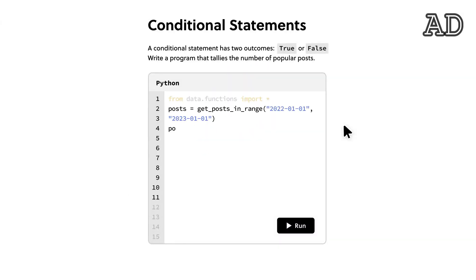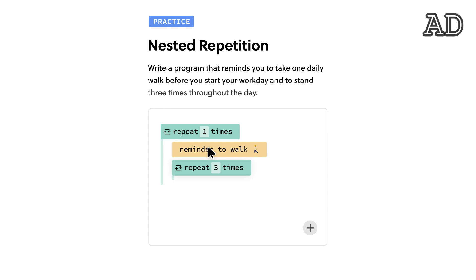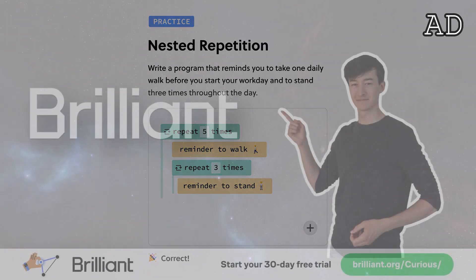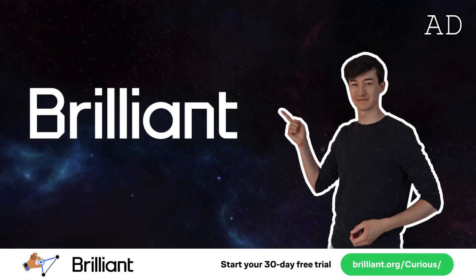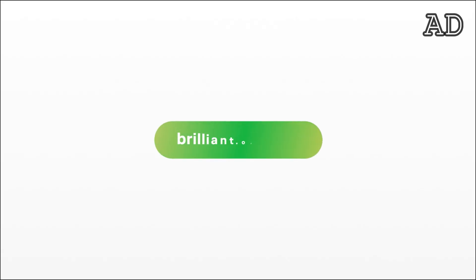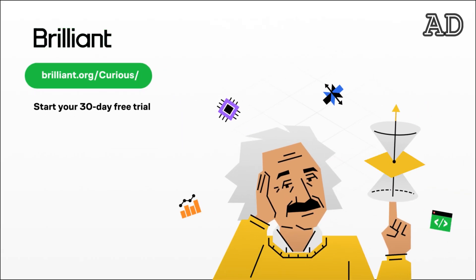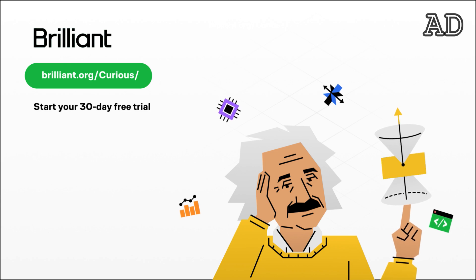They have courses on for example Python, which is something that I especially love. You can get familiar with programming using a drag and drop editor. You will learn how to think like a programmer and build a strong foundation. So if you are interested in learning useful skills and building a strong knowledge base, this is for you. To try everything that Brilliant has to offer for free for a full 30 days, visit brilliant.org slash curious or click on the link in the description. You'll also get 20% off of an annual premium subscription.